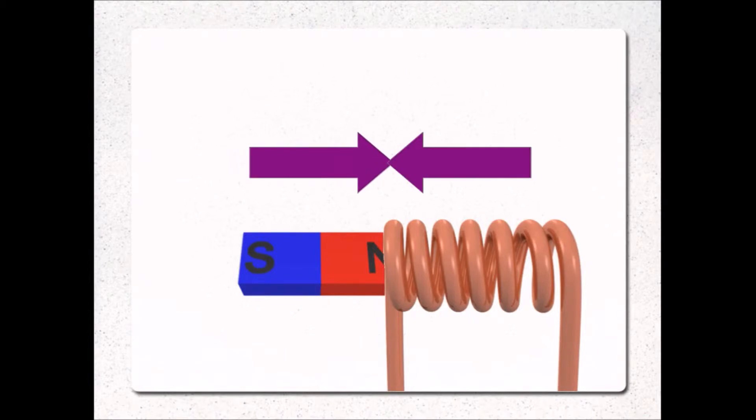Well, the force we apply to the magnet is counteracted by a force going in the opposite direction. The coil applies a force on the magnet, trying to push it back out. How does that happen?